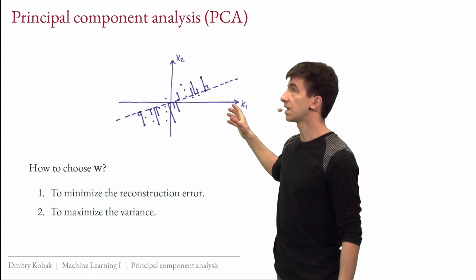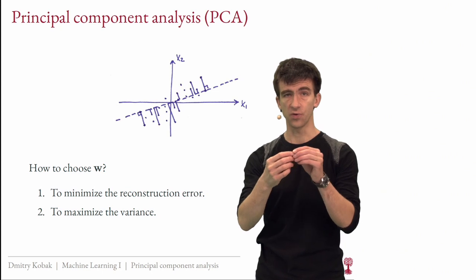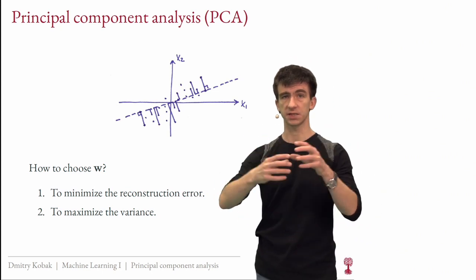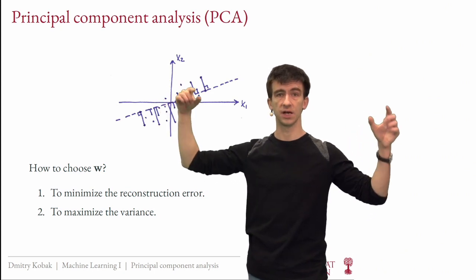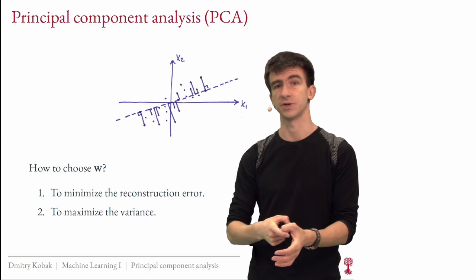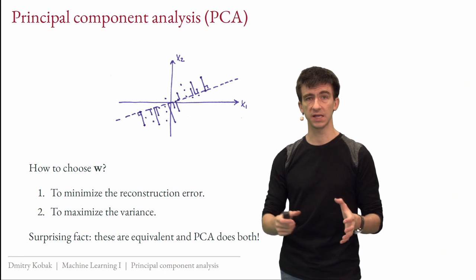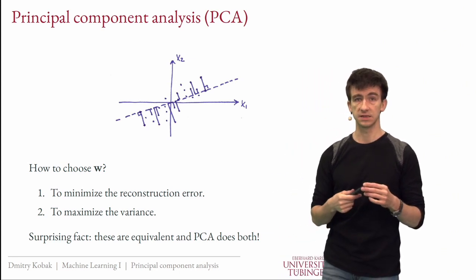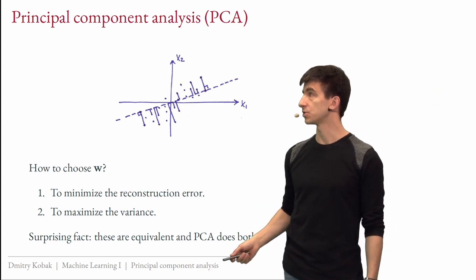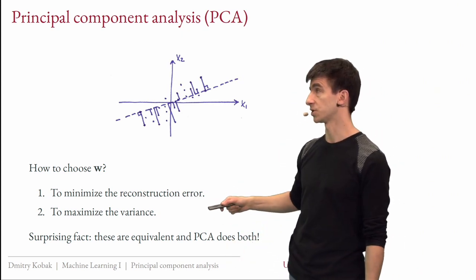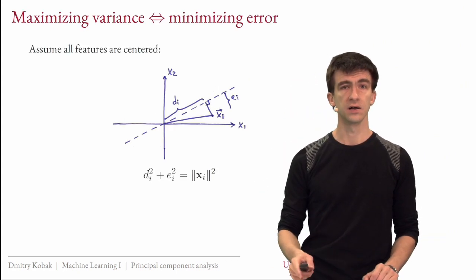This applies in any number of dimensions. You can have 10 original dimensions, project everything onto one dimension, and either minimize reconstruction error or maximize variance. The amazing thing is that these are actually the same objective — they are equivalent. Principal component analysis does both. You can introduce PCA via either criterion; let me prove this.